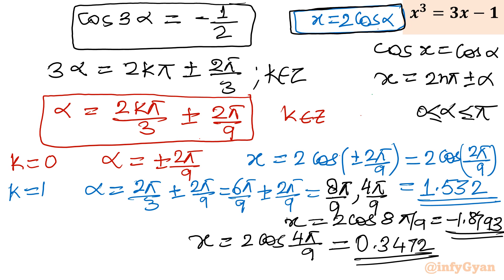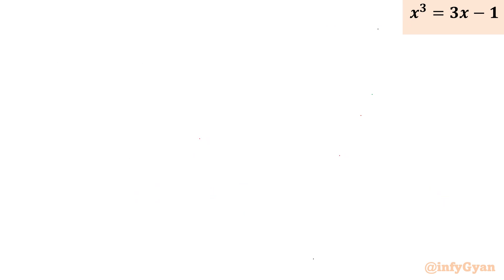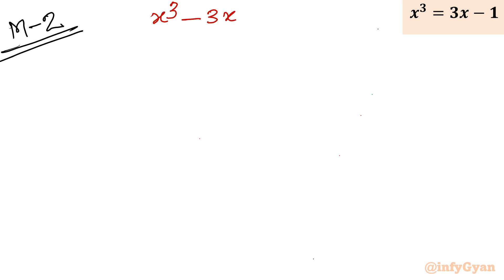The general solution should lie between 0 and π. There are 3 solutions for this cubic equation. Now let me take you toward the second way of solving this problem — method number 2, the algebraic method, also called the formula method or Cardano's method.